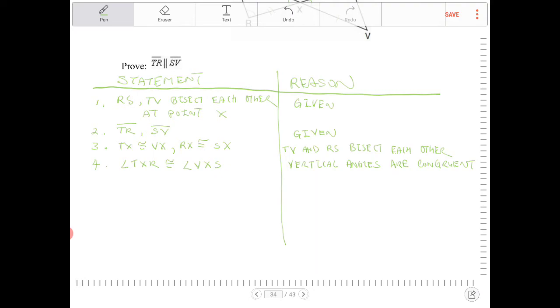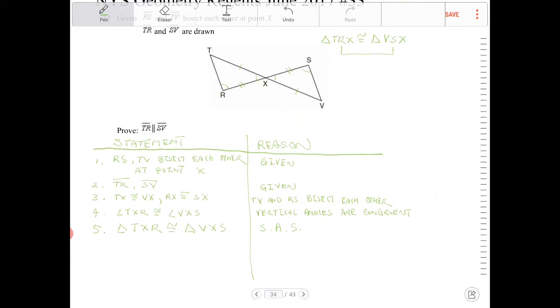Okay, so we have vertical angles are congruent. We have those two pairs of corresponding sides are congruent. Then we can establish that triangle TXR is going to be congruent to triangle VXS. Because of side, angle, side. Right? So again, TXR to VXS. Because of side, angle, side.